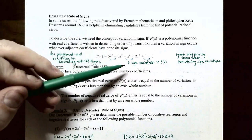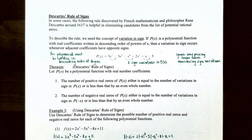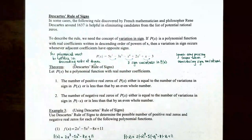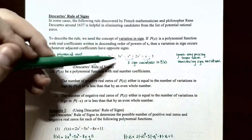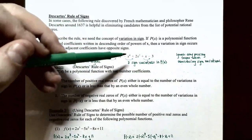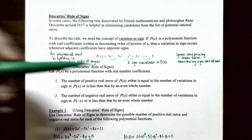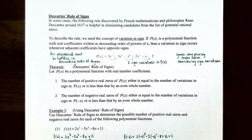If you count up the sign variations, there are three sign variations for the polynomial function P of x. Notice that you can ignore any missing terms — we had x to the 6th and x cubed missing. You only need to worry about two terms that are adjacent when comparing whether the coefficients go from positive to negative or negative to positive.